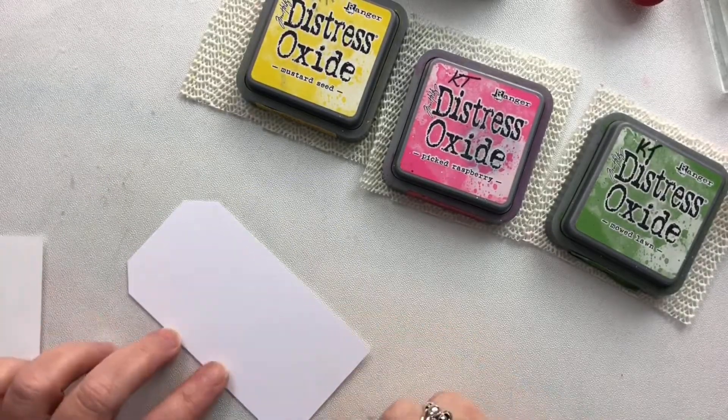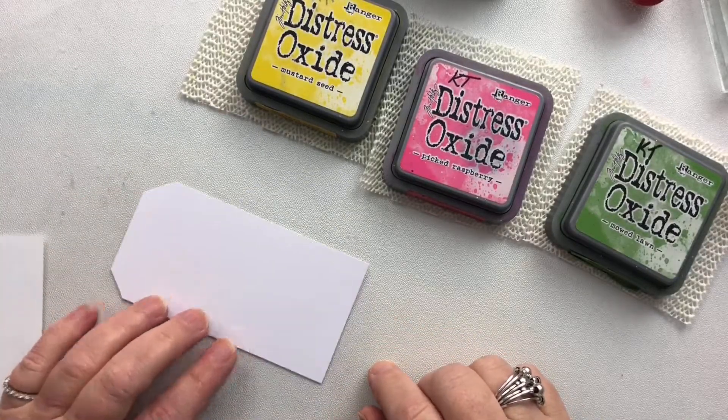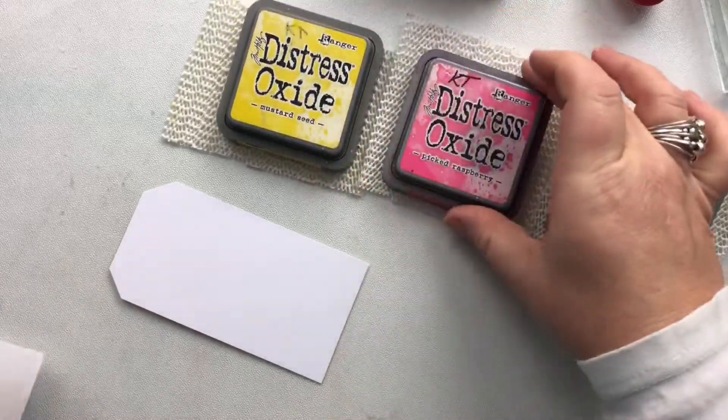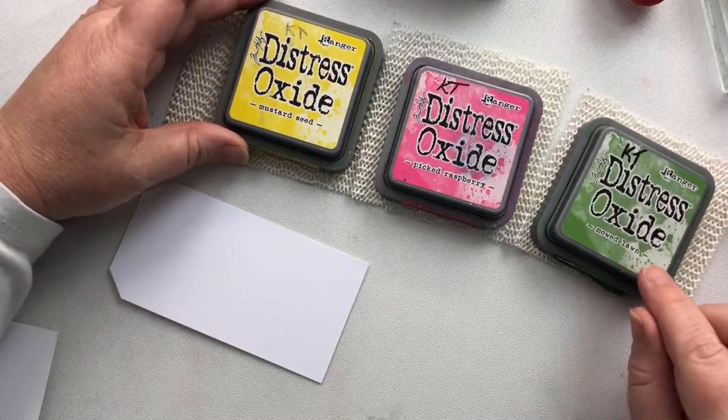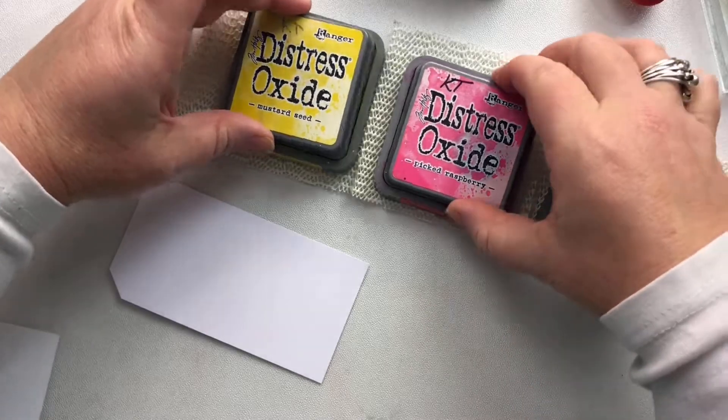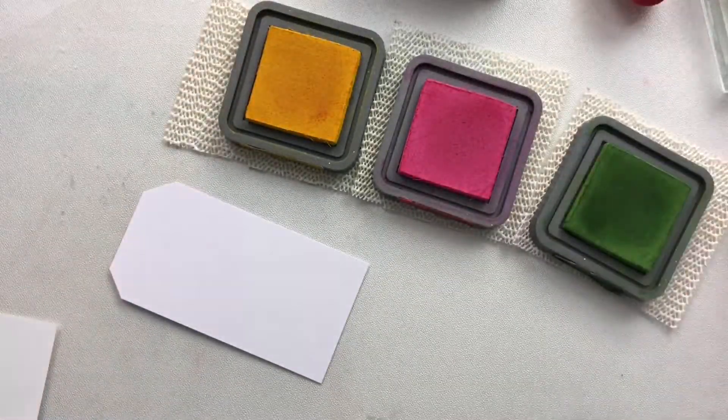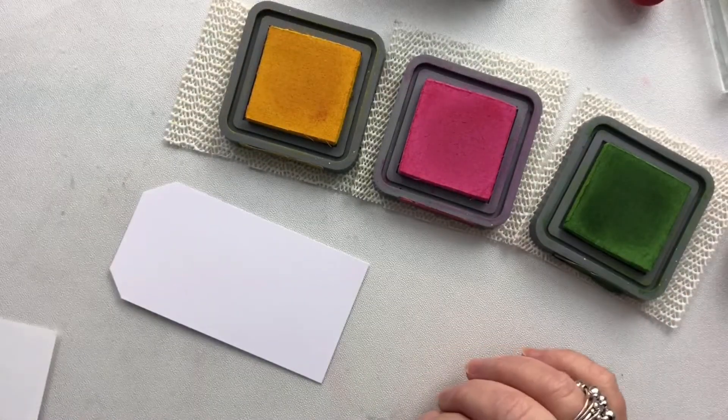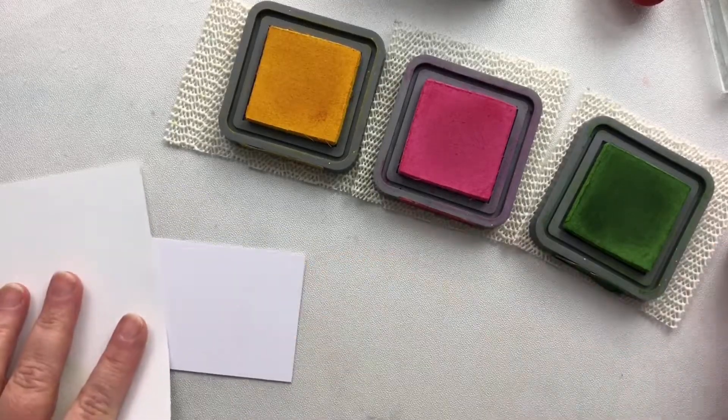So my tag, as always, six and a half centimeters by twelve and a half centimeters. The three colors that I'm using are Mowed Lawn, Picked Raspberry and Mustard Seed. I'm using Oxides but Distress inks would work just as well.